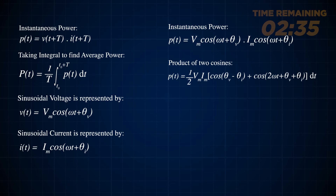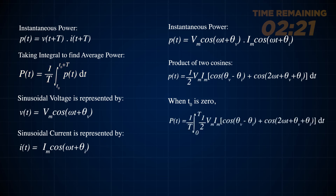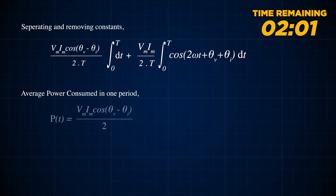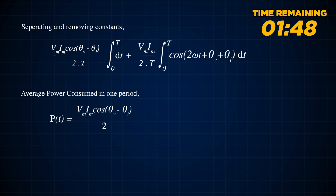This equation can further be simplified. Substituting into equation one, we get the average power for T equals zero. Bringing all constants outside the integral, the second integral will be zero because the average of a cosine function over one period is zero. When we solve the integral, we get P = (Vm × Im / 2) × cos(θv − θi). This is the average power that a circuit element will consume in one period.